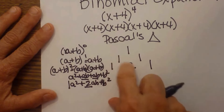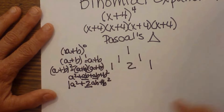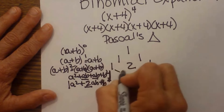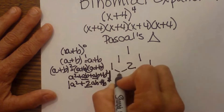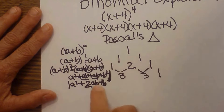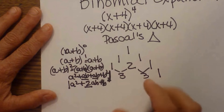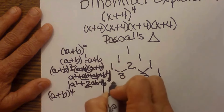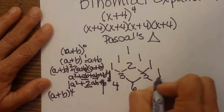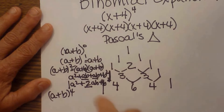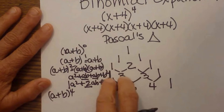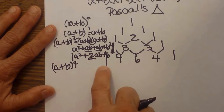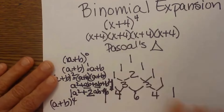These coefficients are generated by adding the two values from the layer before. Adding the coefficients from the previous layer, when I cube a binomial the lead coefficients are one, three, three, one. If I raise it to the fourth power, a plus b to the fourth, my lead coefficients are going to be one, four, six, four, and one. Each layer is formed by adding adjacent coefficients in the triangle.